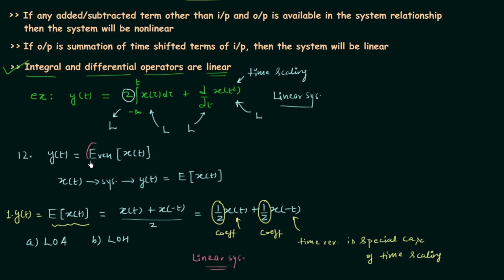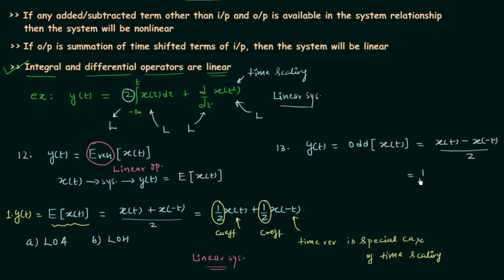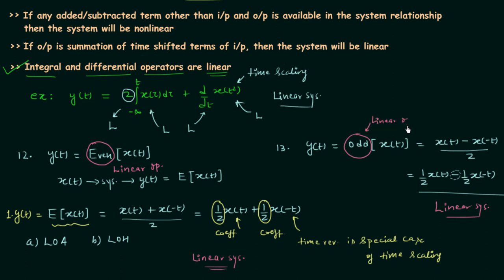By using the properties we have proved that the system is a linear system — meaning the even operator is a linear operator. For the odd operator (13th problem), output y(t) equals the odd component of x(t), which is [x(t) − x(−t)] / 2, or (1/2)x(t) − (1/2)x(−t). Comparing with the even component formula, the only difference is the minus sign, and we know a negative sign does not affect linearity. So the odd operator is also a linear operator.